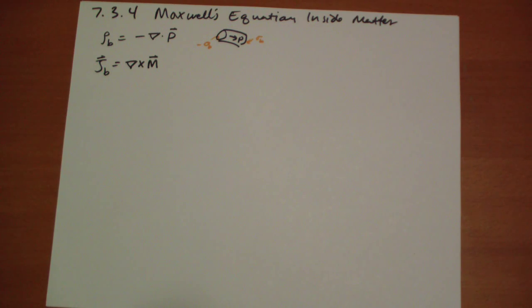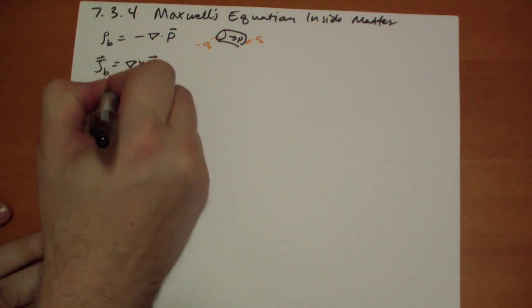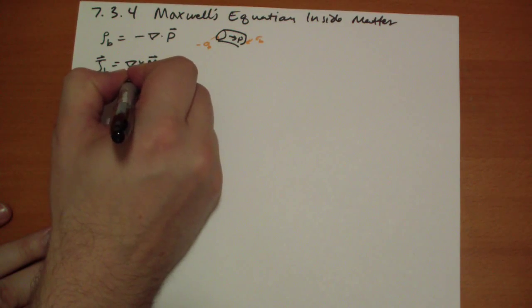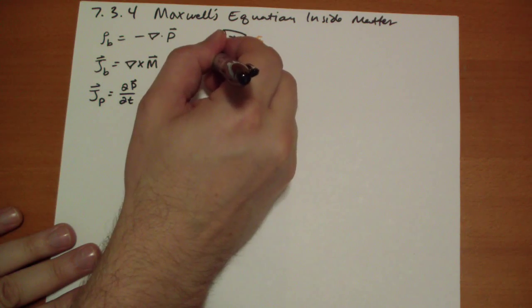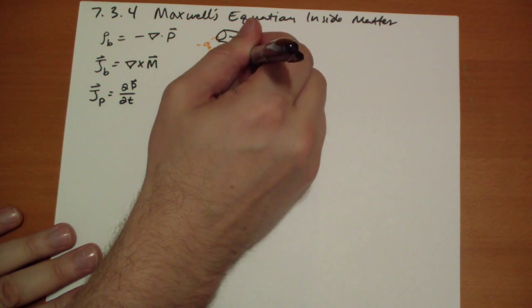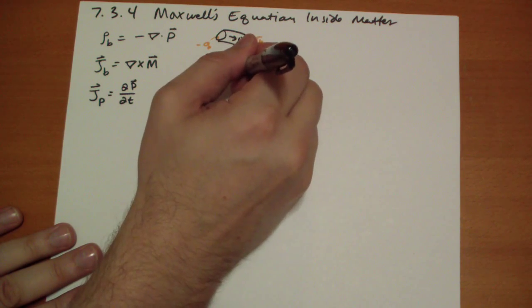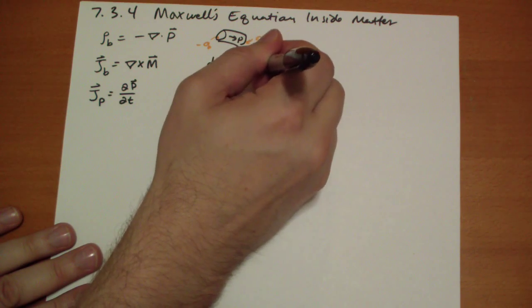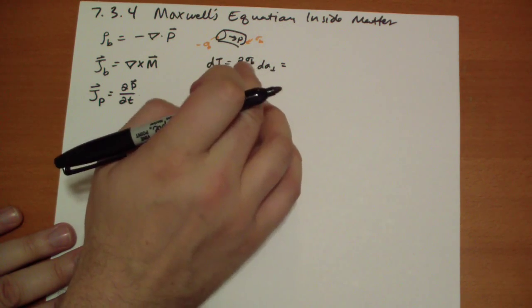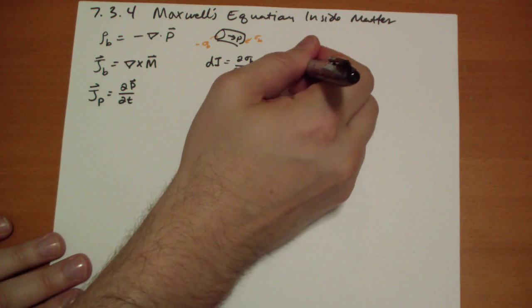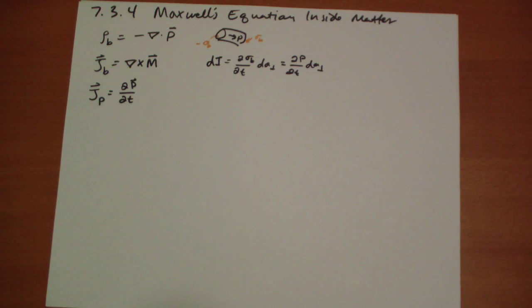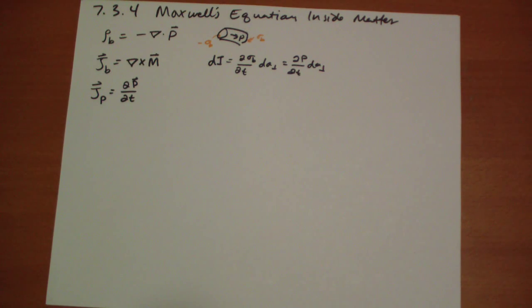So what if the polarization is changing? Well, now your surface charges are changing as well. So the current density due to polarization is going to be equal to the change in polarization over time. There's a change in the current equal to the change in sigma_b, the bound surface charge, over time. And the bound surface charge changes in proportion to how P changes, because it's just the dot product of P dot the normal. So the current is equal to the change in time of the polarization.